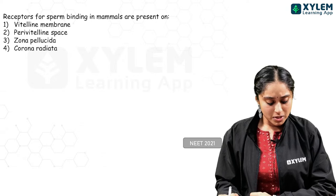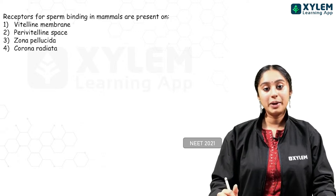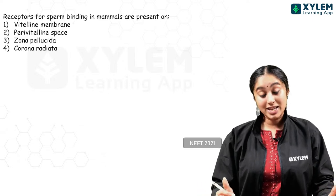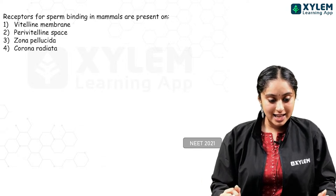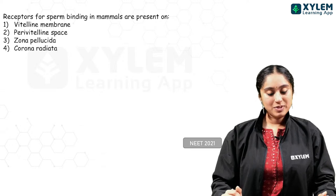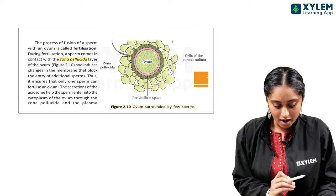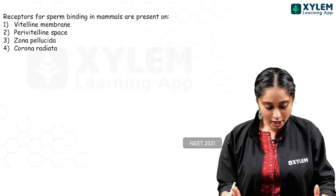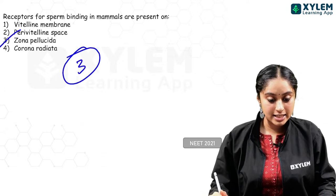One question: receptors for sperm binding in mammals are present on which structure? The egg has a vitelline membrane, perivitelline space, zona pellucida, and corona radiata. Receptors for sperm binding are present on the zona pellucida — the sperm meets and penetrates the egg there. Option 3 is the right answer.